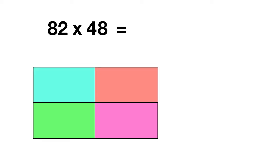Here's your last one for today. Use an area model to figure out what 82 times 48 equals. On your area model, split 82 into 8 tens, or 80, and 2 ones, or 2. Then split 48 into 4 tens, or 40, and 8 ones, or 8.